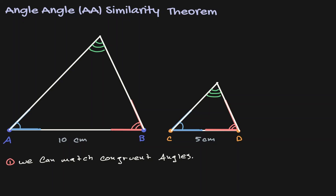We have stated a relationship among angles. So now let's think about whether there is any relationship among the sides of these two triangles. We have some information: we know that AB has a length of 10 and CD has a length of 5. Notice that those two line segments are between the blue and the red angle — they seem to be in proportion. It seems like if we get the length of the left hand side and multiply by one half, we will get the length on the right hand side.